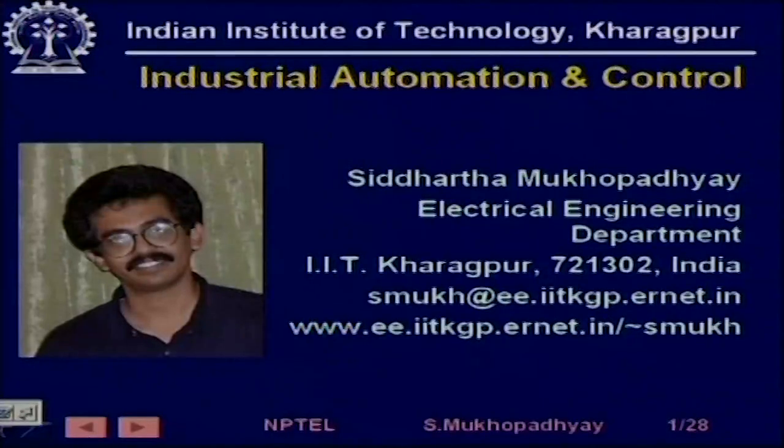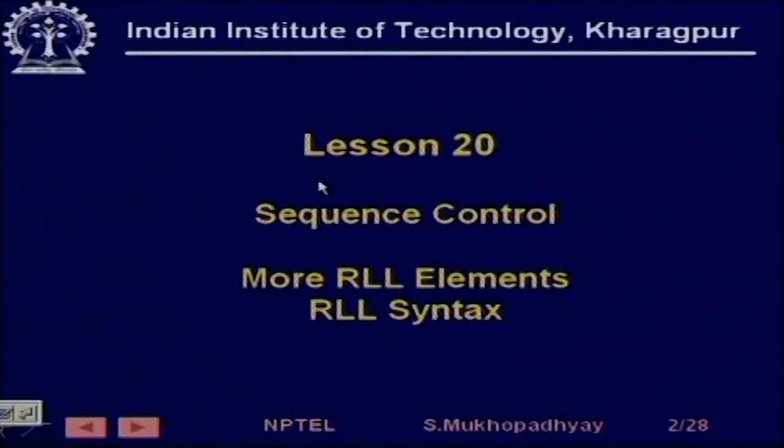Welcome to today's lesson, which is lesson number 20 of the course on industrial automation and control. Today we are going to look at some new programming elements, namely timers, counters, etcetera, which are required for RLL programming. We are going to understand their meanings and see their use in real, typical industrial programs.